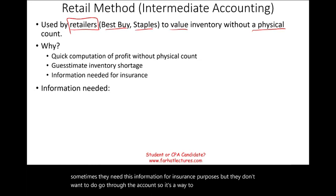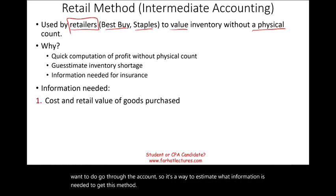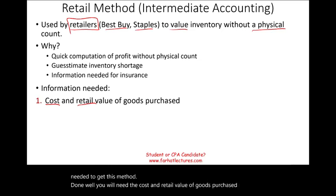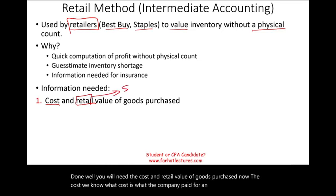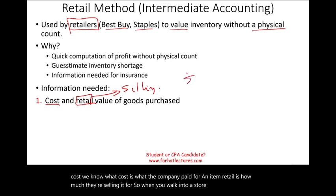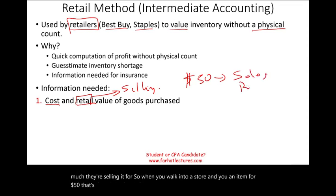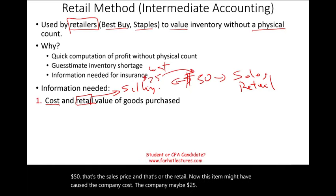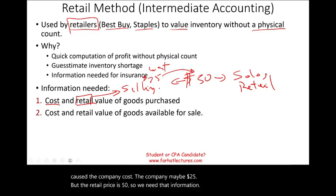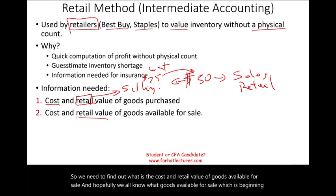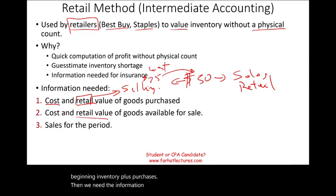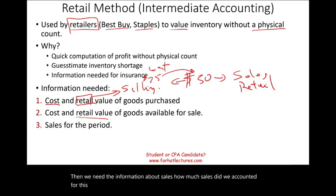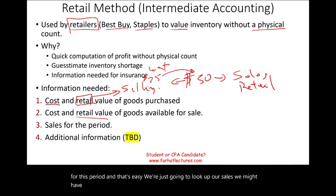To apply this method, you need the cost and retail value of goods purchased. Cost is what the company paid for an item; retail is how much they're selling it for. For example, an item might cost the company $25 but have a retail price of $50. We need the cost and retail value of goods available for sale — beginning inventory plus purchases — plus information about net sales for the period.